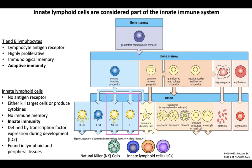Some other defining features of innate lymphoid cells include the fact that they express a transcription factor called ID2 at the common lymphoid progenitor stage, which suppresses their differentiation towards B or T cell fates, and makes them ILCs instead. They're found pretty much everywhere, as they're located in lymphoid organs, as well as in peripheral tissues such as the skin, gut, and lung. Beyond these properties, NK cells and ILCs differ considerably with respect to their function.